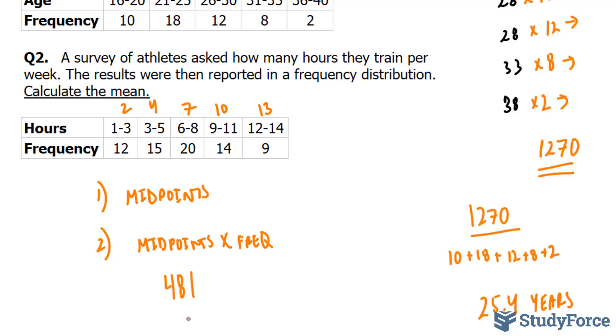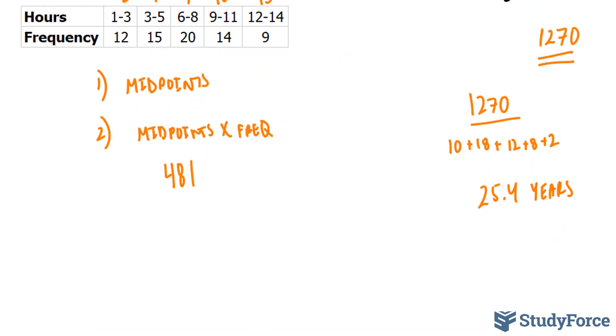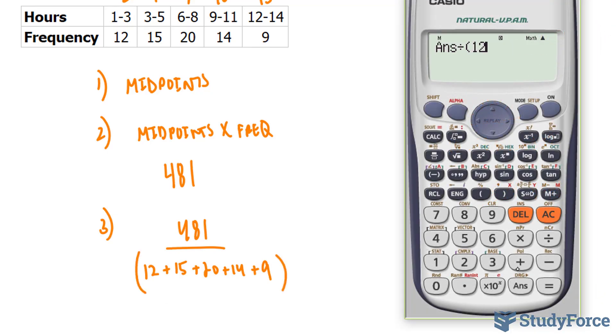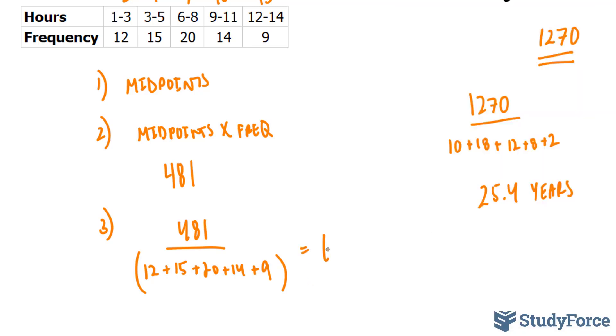And the last step is to take this number, divide it by the sum of the frequency. Divided by 12 plus 15 plus 20 plus 14 plus 9. Using our calculator, dividing that number that we just found by 12 plus 15 plus 20 plus 14 plus 9. And this gives us an answer of 6.87.